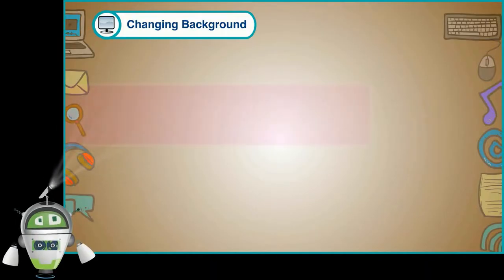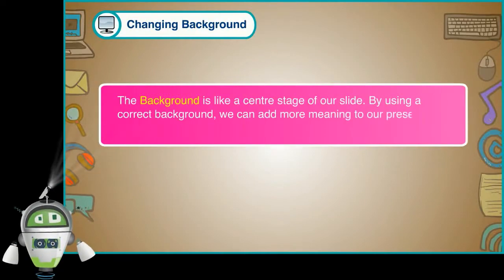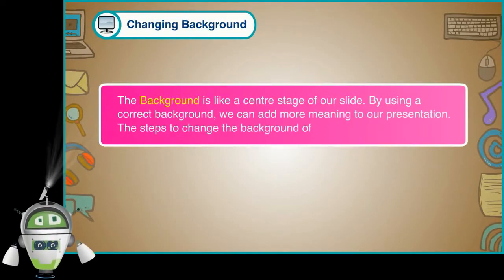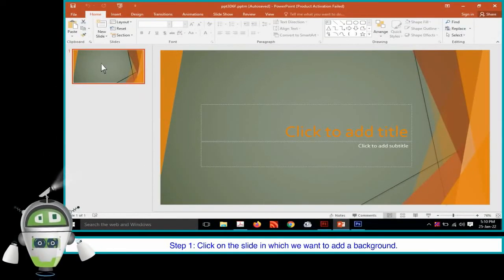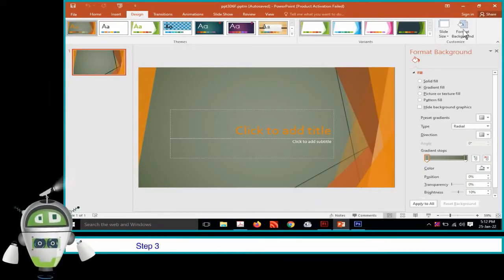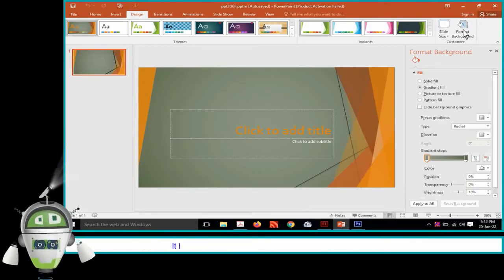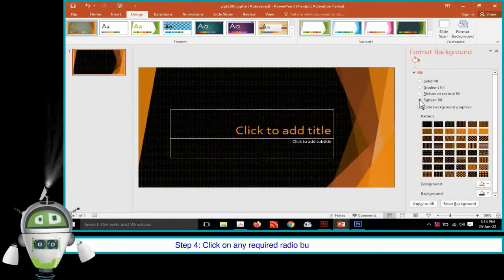Changing Background. The background is like a center stage of our slide. By using a correct background, we can add more meaning to our presentation. The steps to change the background of the slides are as follows. Step 1: Click on the slide in which we want to add a background. Step 2: On the Design tab in the Customize group, click on the Format Background option. Step 3: A Format Background task pane will appear on the right side of the window. It has 5 fill effects: Solid Fill, Gradient Fill, Picture or Texture Fill, Pattern Fill, and Slide Background Fill. Step 4: Click on any required radio button from these options. The background will get changed.